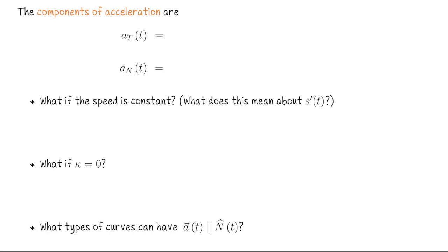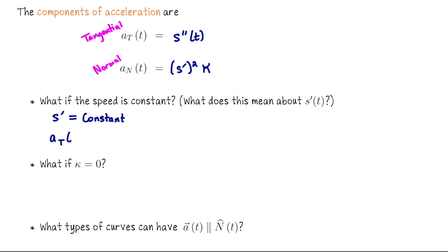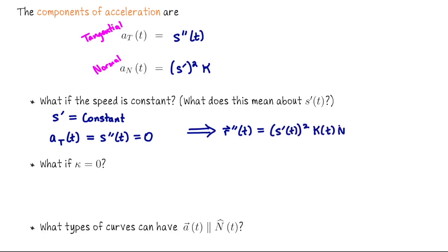These coefficients are called the components of acceleration. The tangential component is s″ — the coefficient in front of T̂. The normal component is (s′)²·κ — the coefficient in front of N̂. For a constant speed parametrization, s′ is constant so s″ = 0, meaning the acceleration vector is entirely parallel to N, pointing in the same direction. The first example — the standard parametrization of the unit circle — illustrates this.